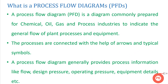So what is a Process Flow Diagram? A Process Flow Diagram is generally known as PFD in the process industry. It is a diagram commonly prepared for chemical industry, oil and gas process industry, or steel industries to indicate the general flow of plant processes and equipment. Process flow diagrams are prepared for process industries because their processes are very complicated. The complete cycle is broken into small process flow diagrams, connected with the help of arrows and typical symbols, which tell the direction of process flow.